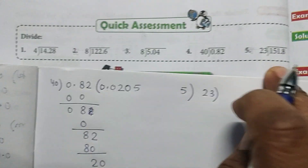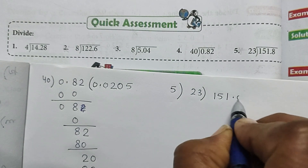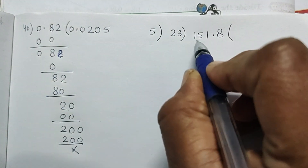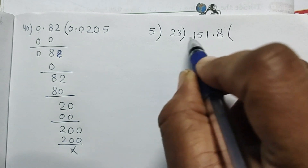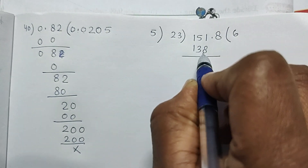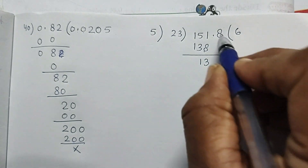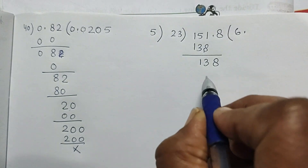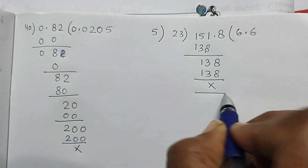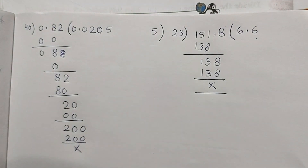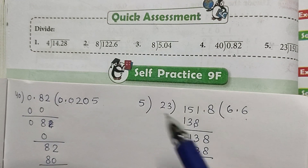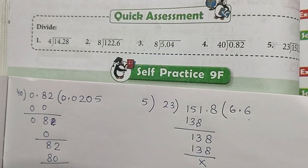Fifth part: divide 151.8 by 23. 23 sixes are 138, 151 minus 138 is 13. Bring down 8 - place decimal first. 138: 23 sixes are 138, division complete. Answer is 6.6. So we have completed the quick assessment on page number 126. In our next video we will start with self practice 9F. Till then take care of yourself, bye bye.